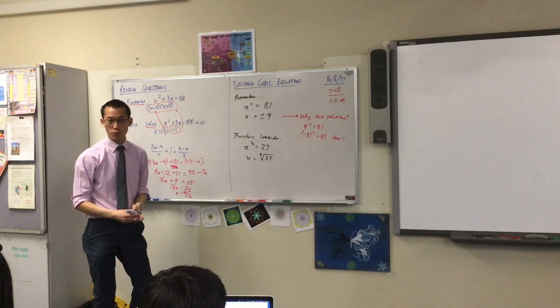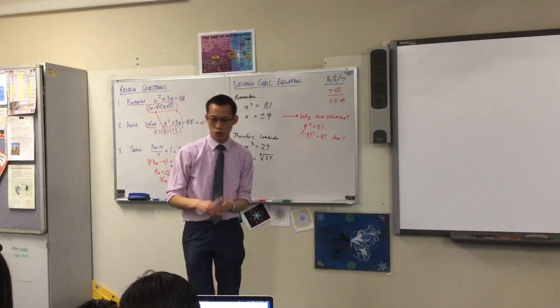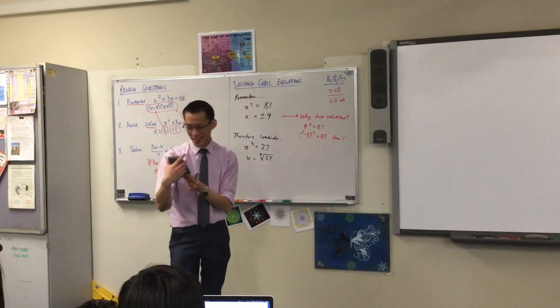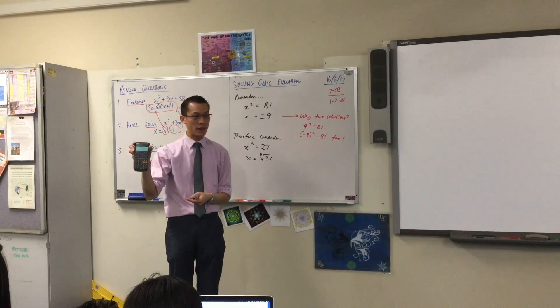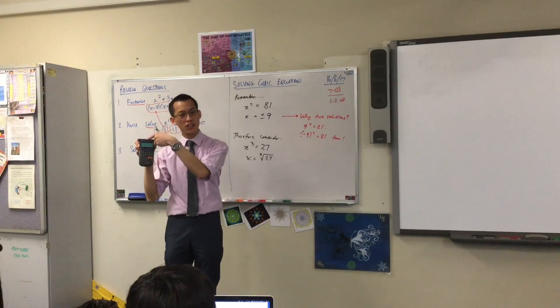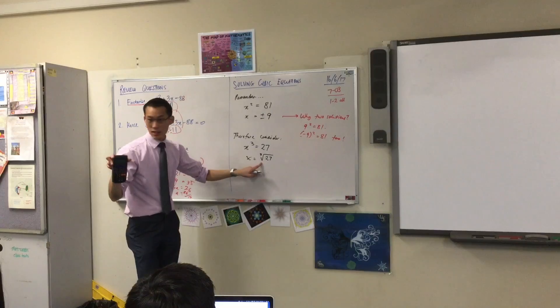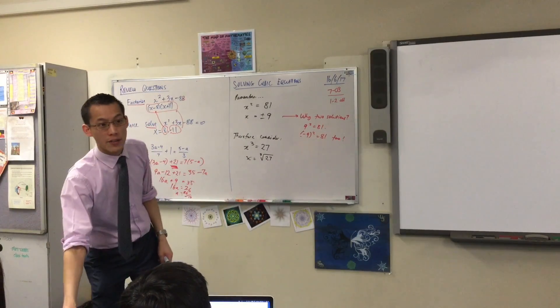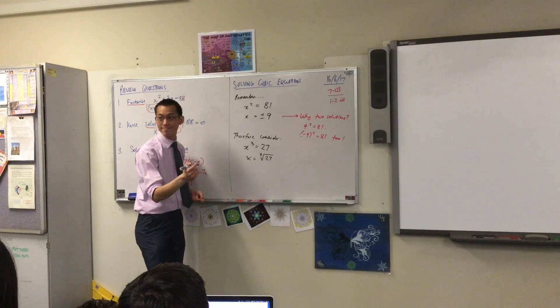Now, your calculator has a cube root button on it. In fact, I would show you on my calculator, except I just gave them both away. It's right at the square root button. Do you notice there? In yellow. So if you went shift square root, you'd get the cube root button. And then you can put 27 underneath there and you will get 3.